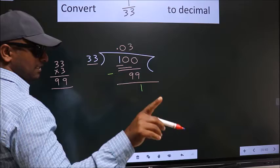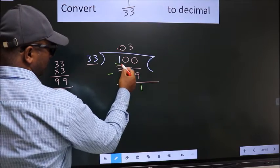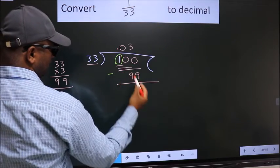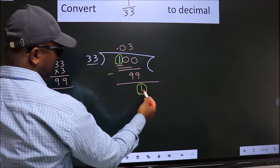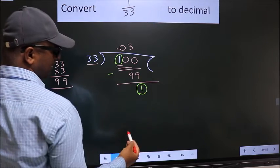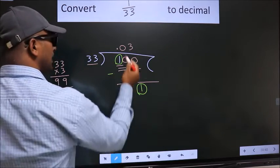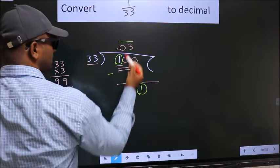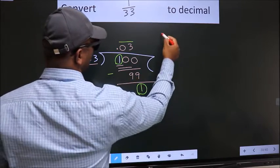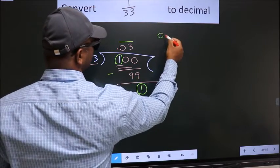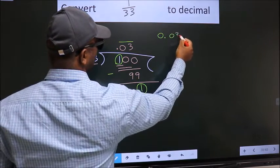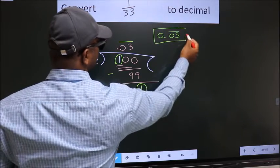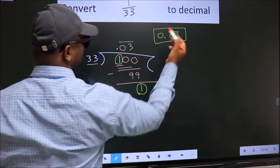Now here you see — here we had 1, and we got 1 again. That means we get a bar on these two numbers. Therefore our answer is 0.03 with a bar on these two numbers. This is our answer.